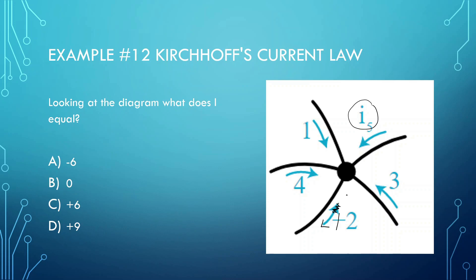Since we have 8 going in, we also want 8 going out. We already have 2 going out, so we want 6 going out. We want 6 going the other way, so that means we need this to be negative 6 — because we want 6 going the opposite direction of the original arrow.